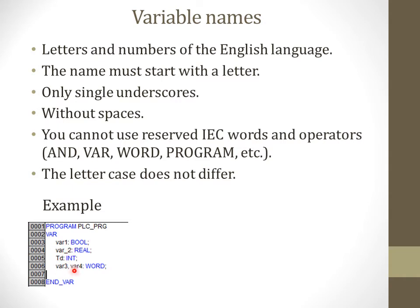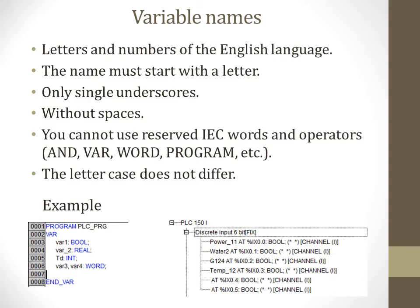For example, in this picture we can see some variable names and data types. Local variables include var1, var2, c, bc, cc, var3, and var4. For global variable names, as we see from this picture, they can be formatted as power_11, water2, g124, temp_12. These are the main principles of declaring variable names.